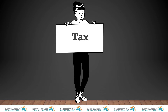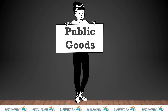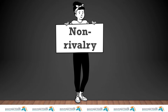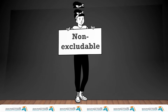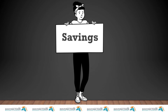Tax is a compulsory payment made by individuals and companies to the government on the basis of certain well-established rules or criteria. Public goods and services are goods and services that are both non-excludable and non-rivalry. Non-rivalry means that consumption by one person does not diminish consumption by others. A good is non-excludable if it is impossible to exclude individuals from enjoying its benefits when the good is provided — in other words, it is impossible to exclude free riders.